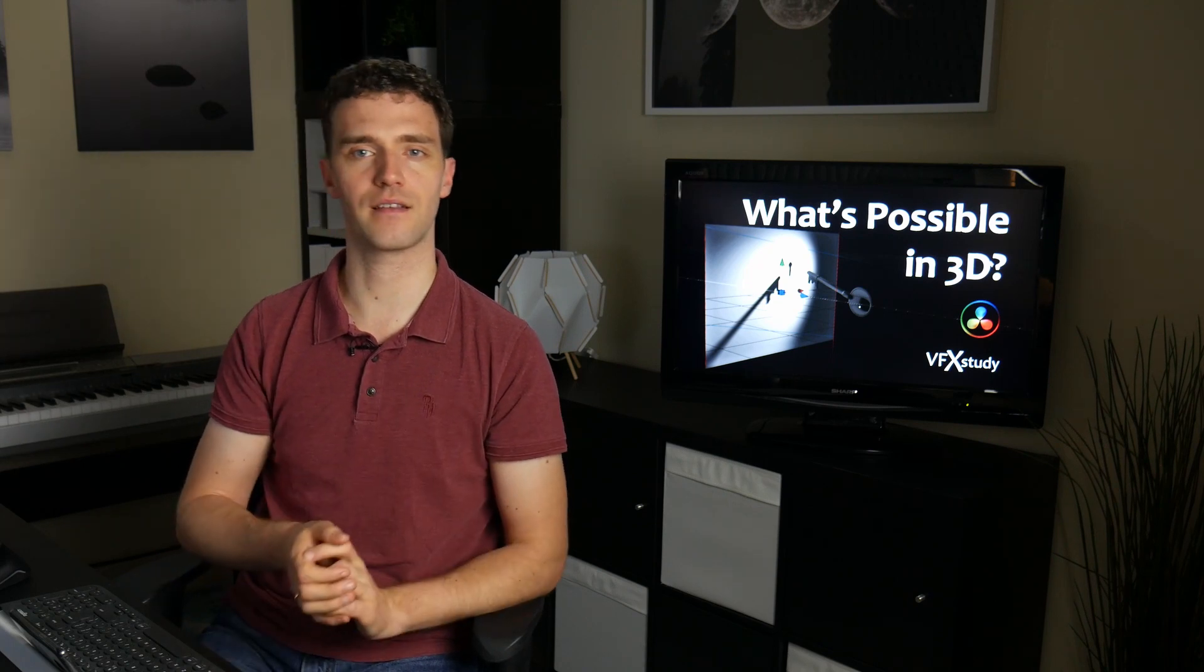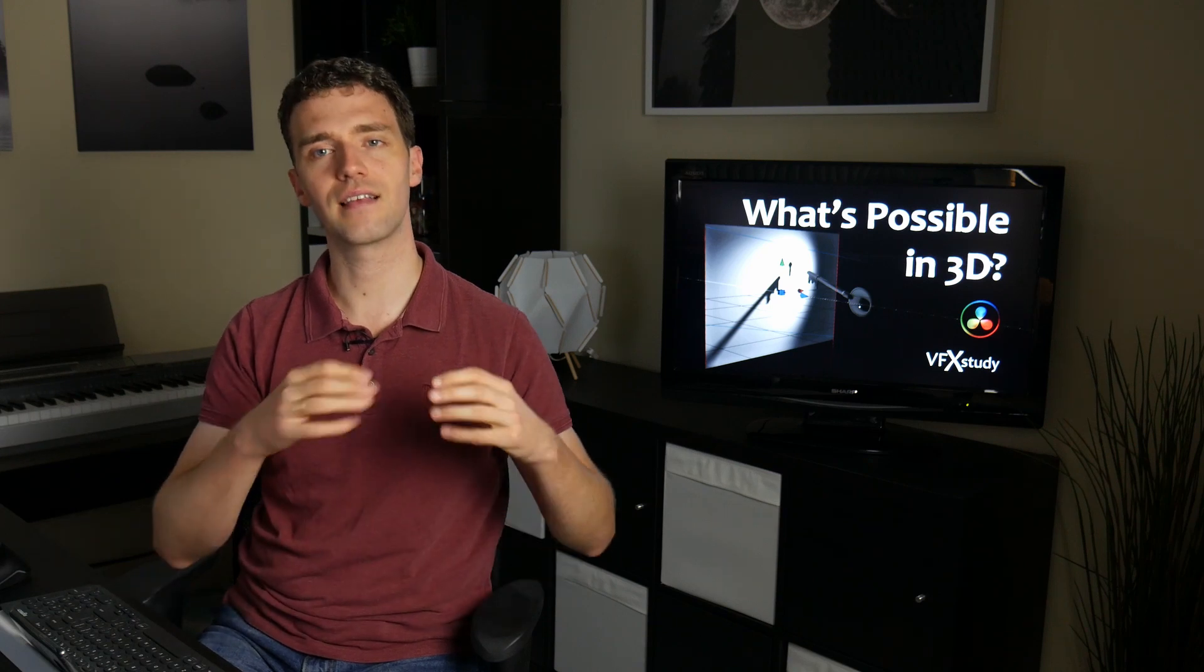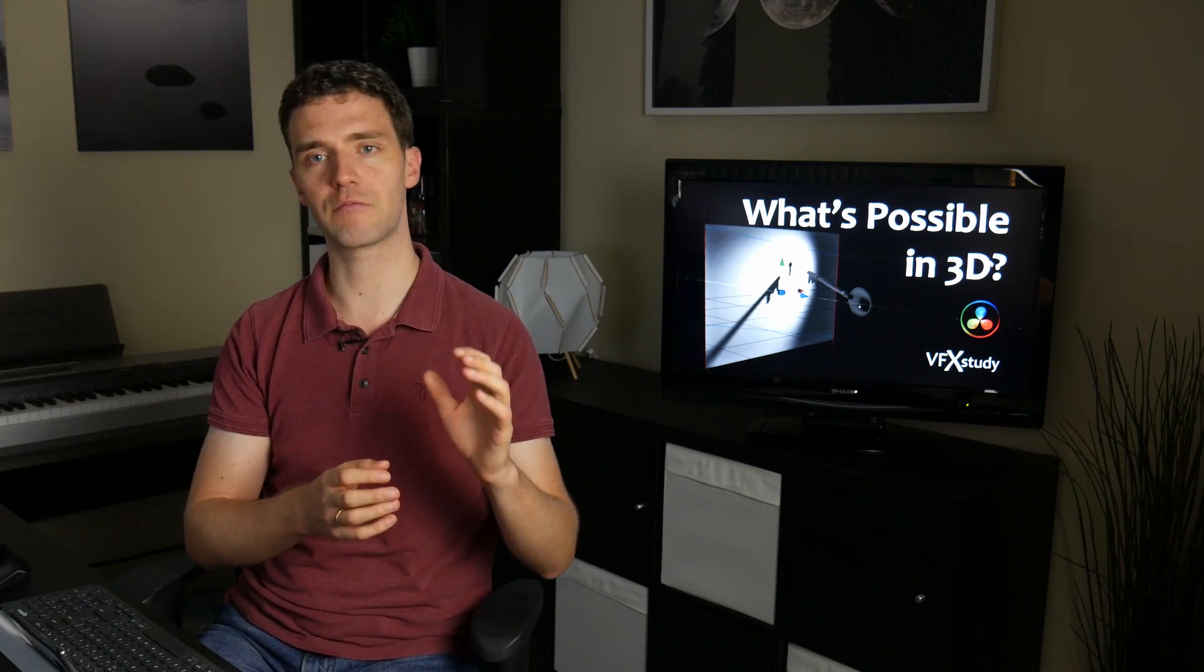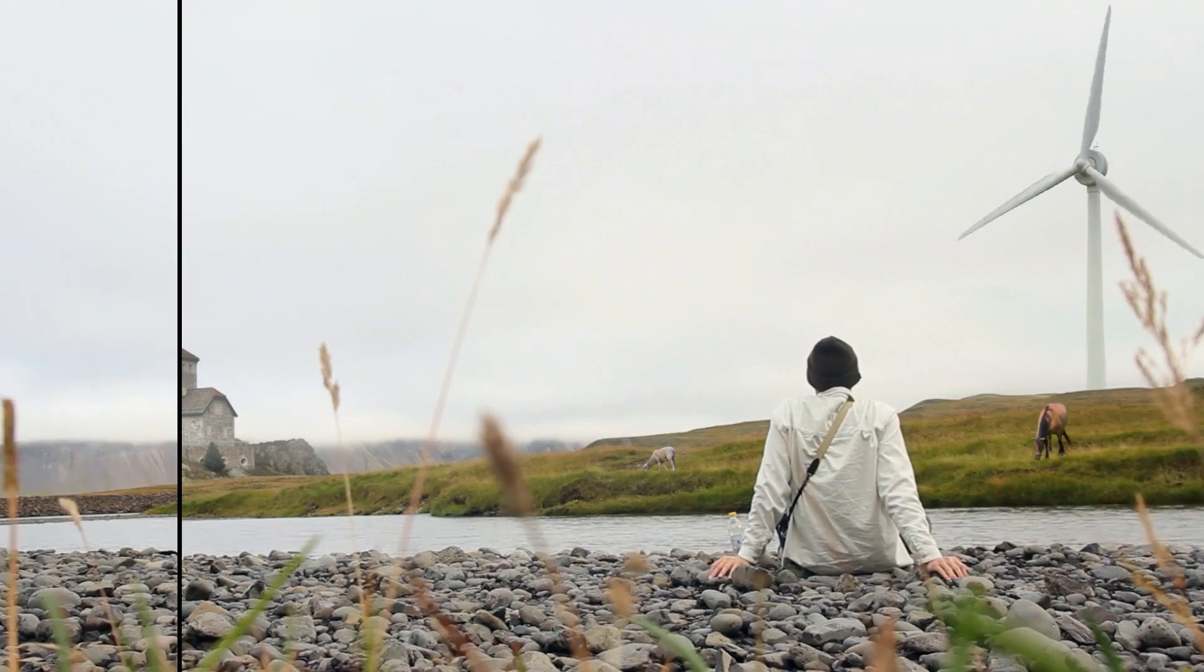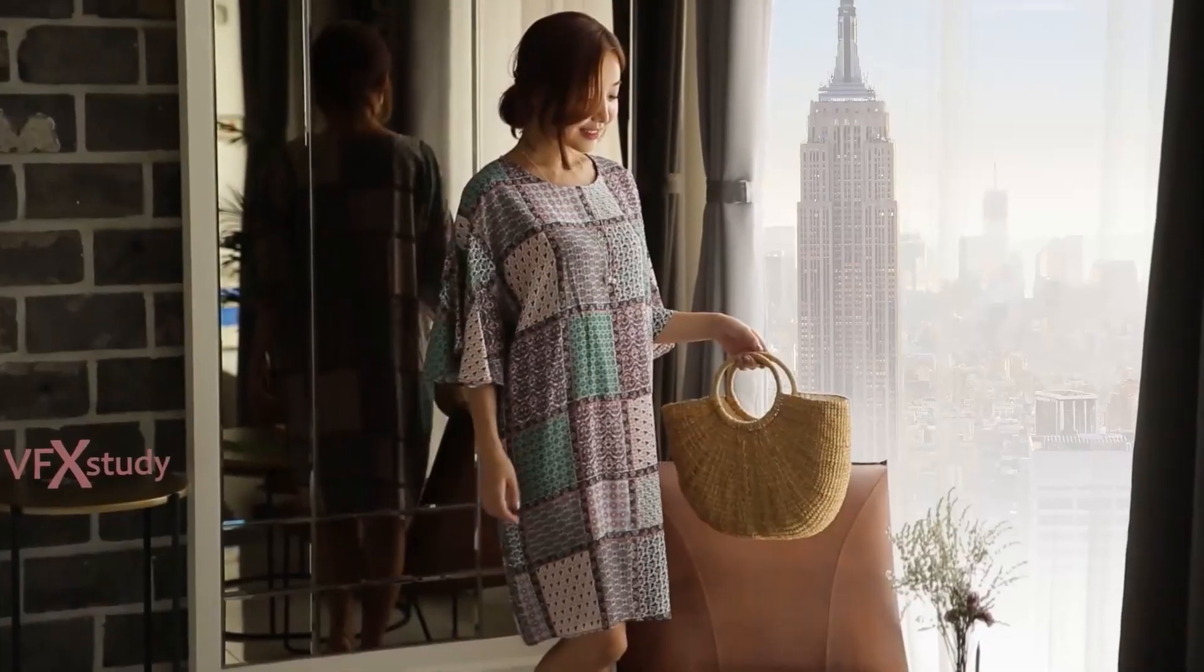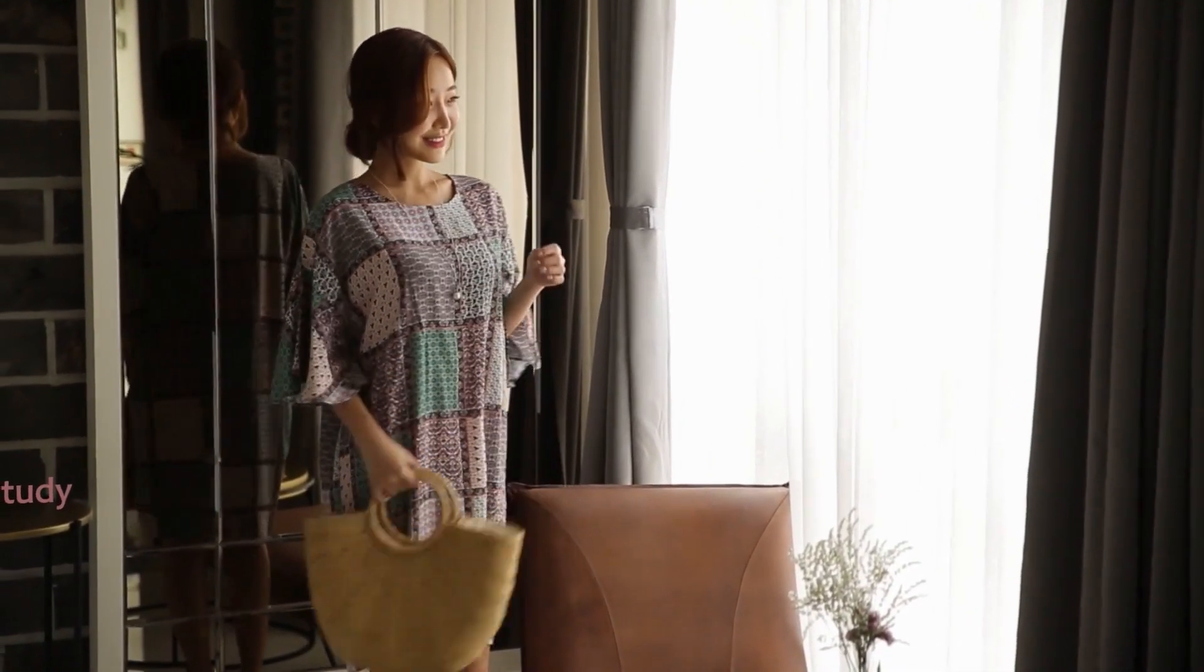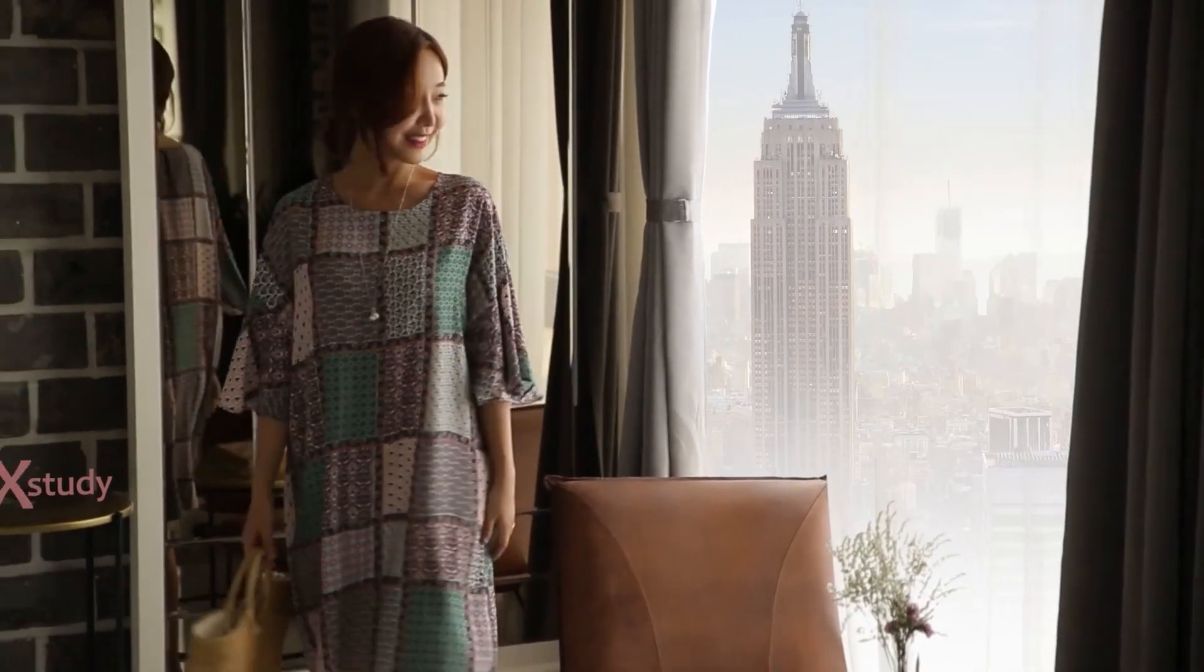And there the first example I think of are 3D set extensions. Now set extensions can be simple. If the camera is locked off, you can actually do it completely in 2D. Or even when you have a moving camera, sometimes it's enough to just track individual points. And with a little bit of trickery, you can fake the perspective even in 2D.